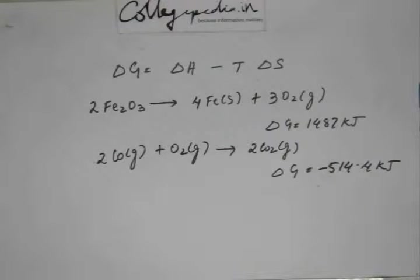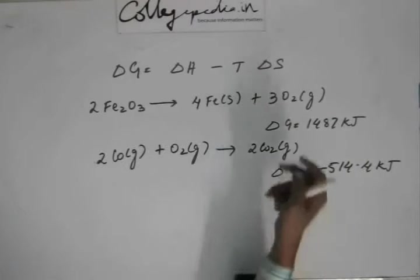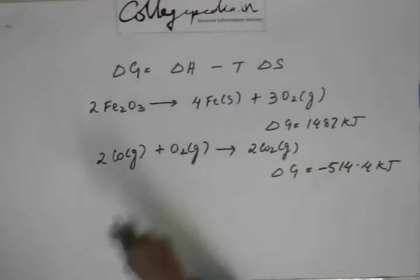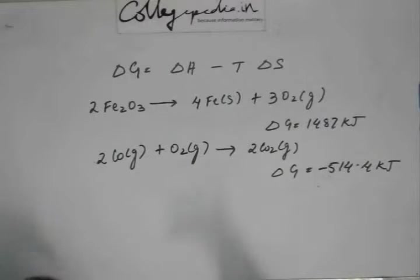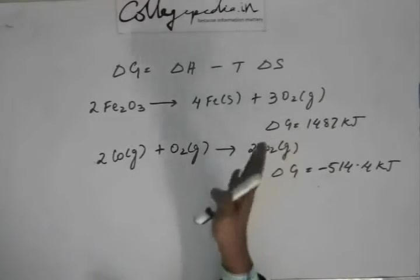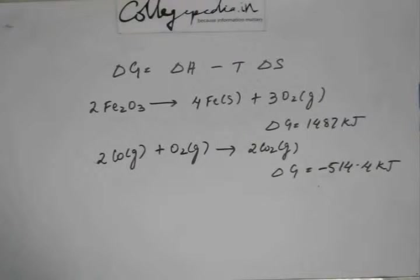So now when you do the coupling, you have to find what is the delta G for the reaction. When you couple it, obviously you have to balance the equation because look, you have three oxygens here and you have one oxygen here. So before adding, you first balance it so that this oxygen and oxygen is cancelled out.